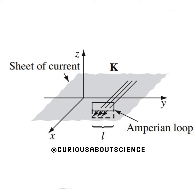Alright, let's redraw the scenario. So we have a sheet of current flowing in the x-y plane, and k is pointing in the x-hat direction. The thing to note here is that above and below z are where all the fun happens. So we can draw an Amperian loop as shown in the diagram, and we can now evaluate this using Ampere's law.